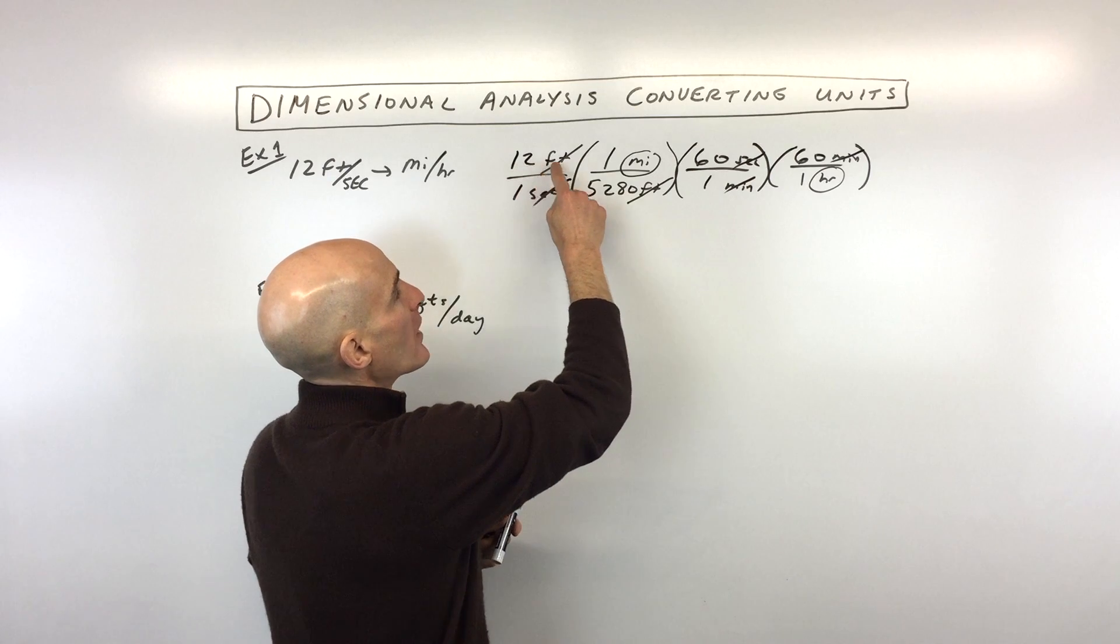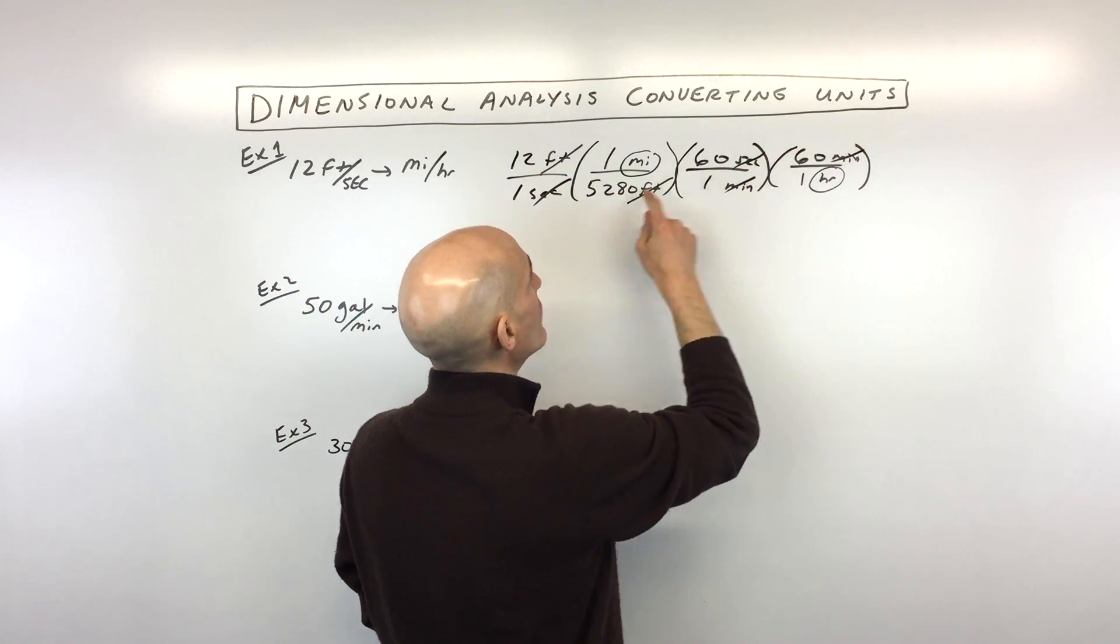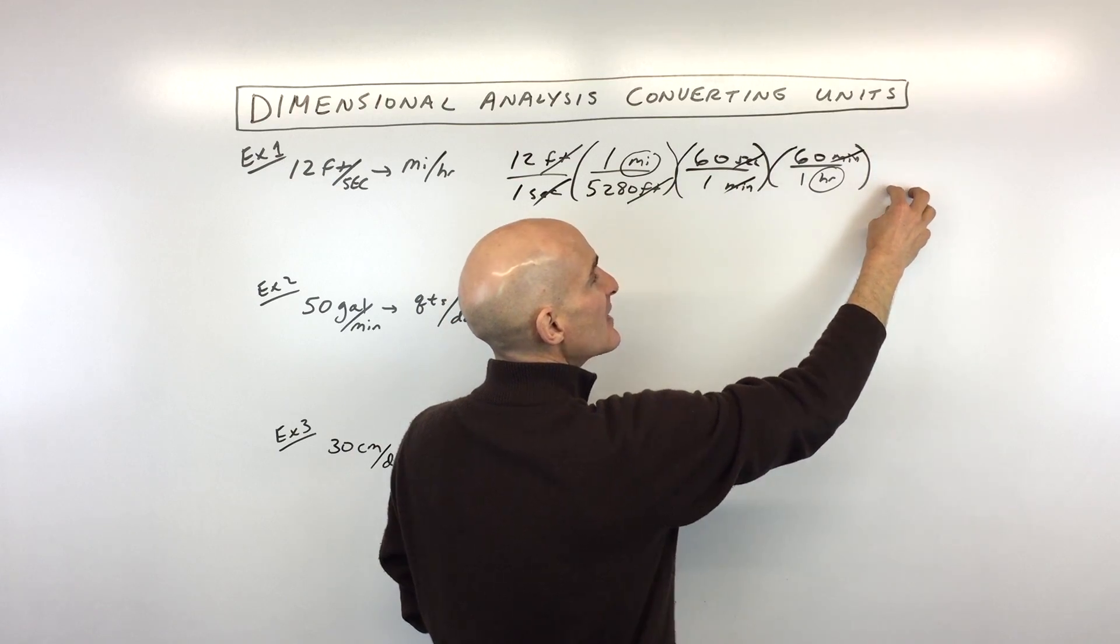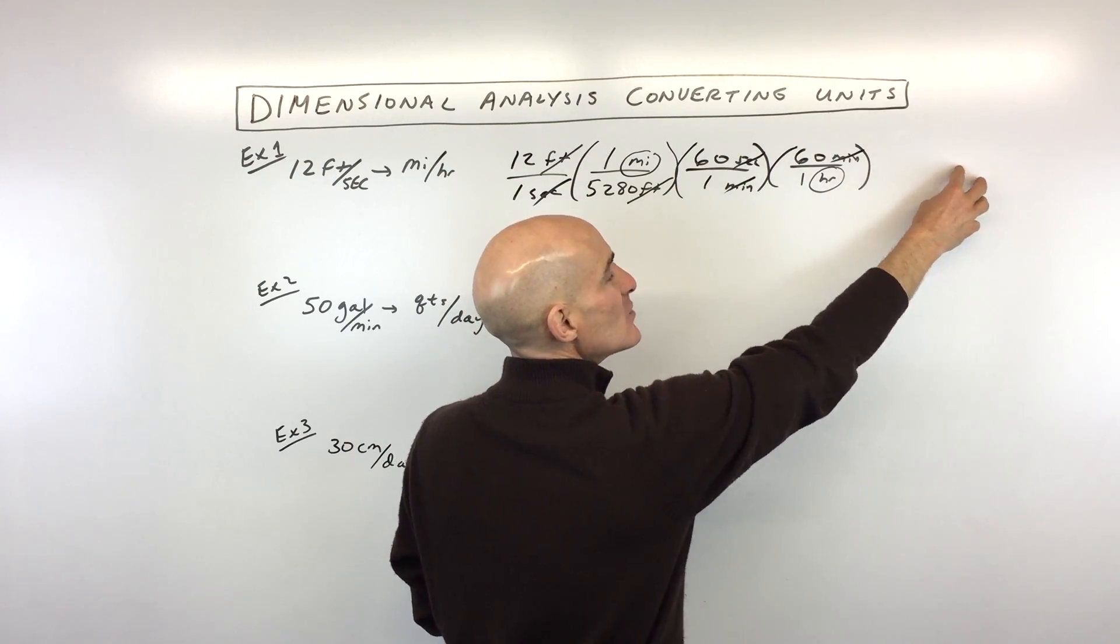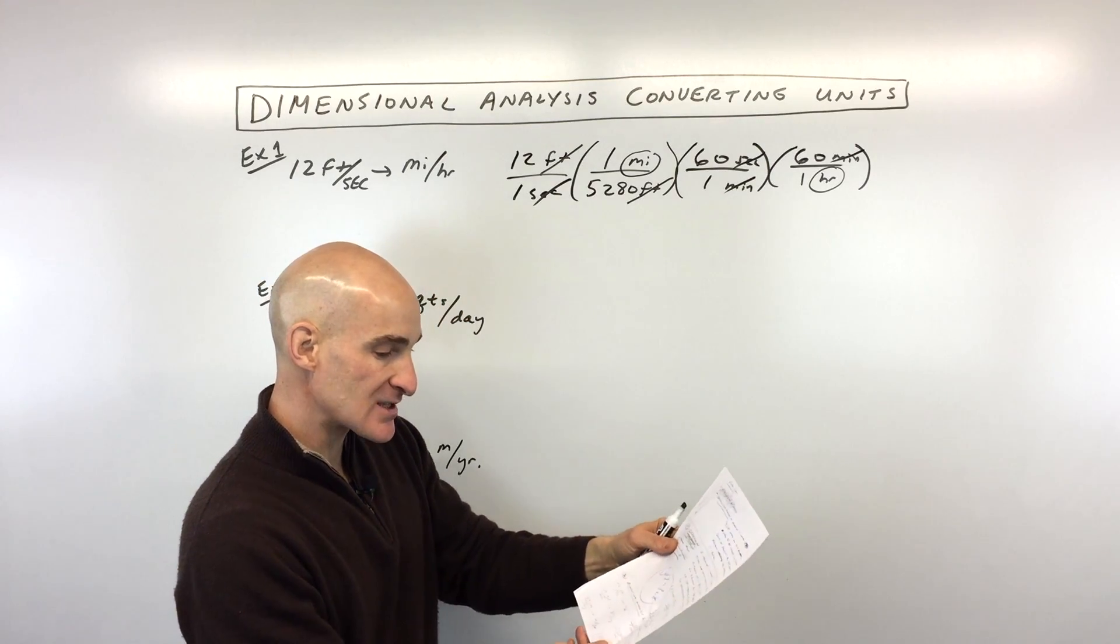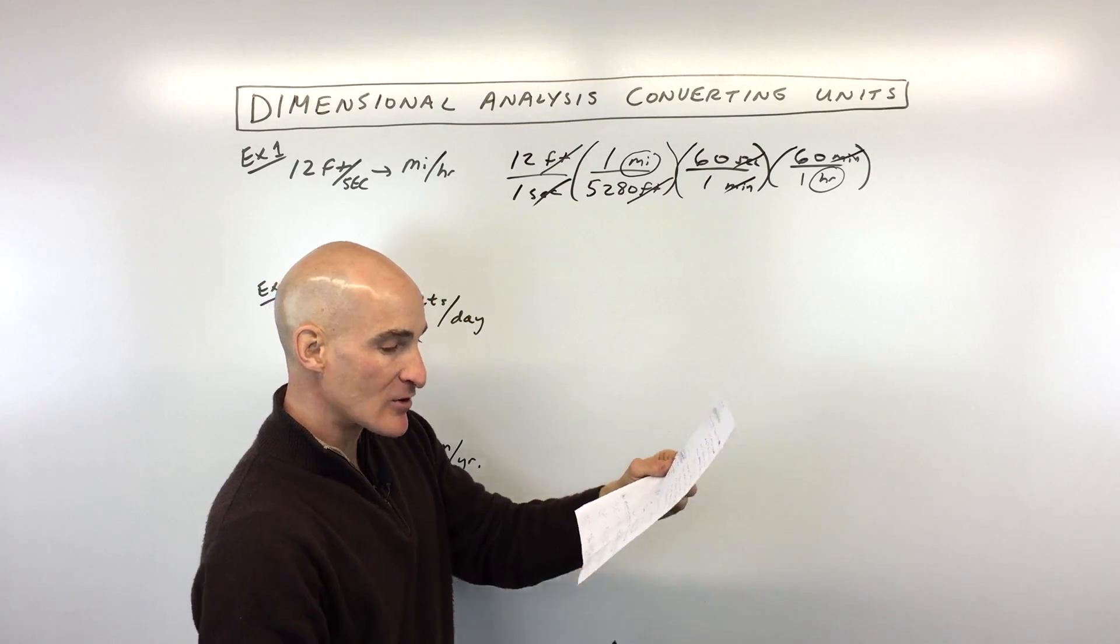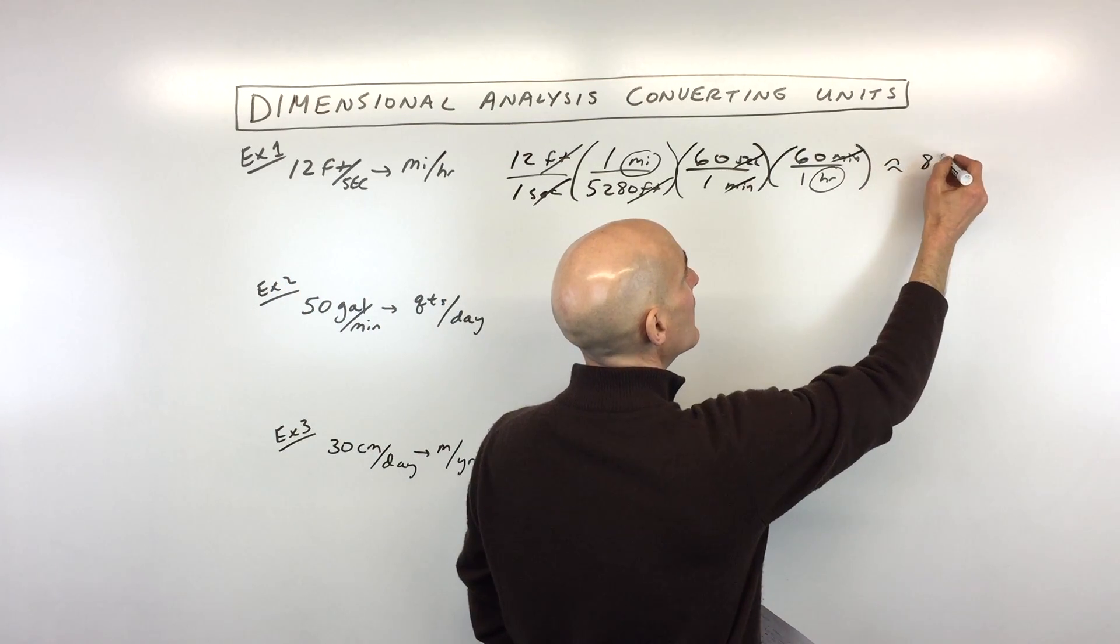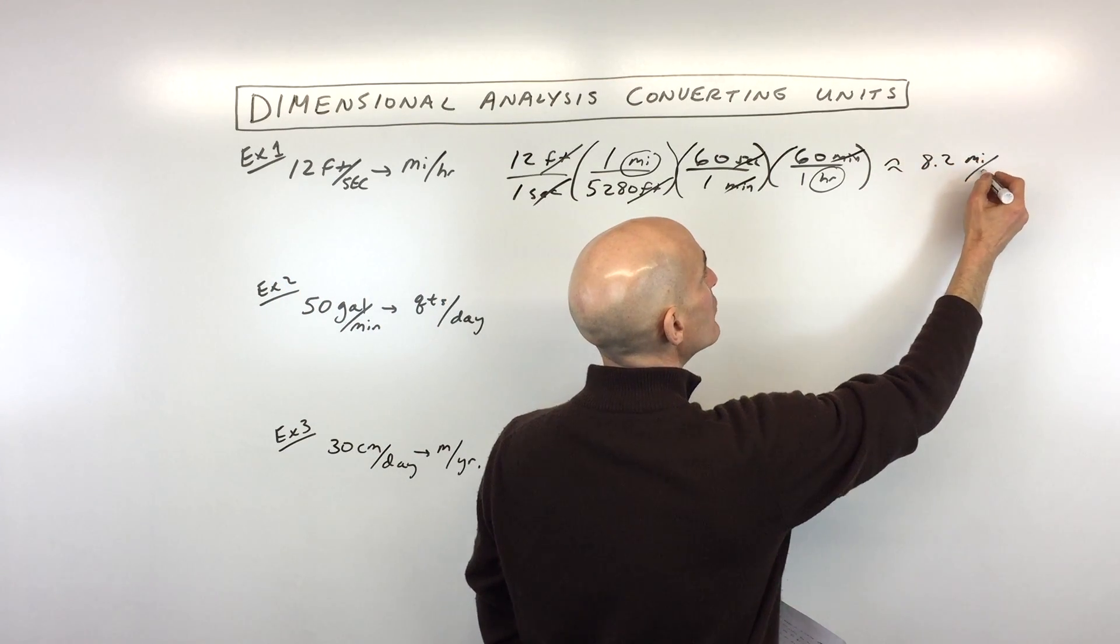So then you would multiply all the numerators together. You'd multiply all the denominators together. You'd have a numerator divided by a denominator - divide those and you get your answer. Now I solved this before I did this video lesson, and it came out to about 8.2 miles per hour.